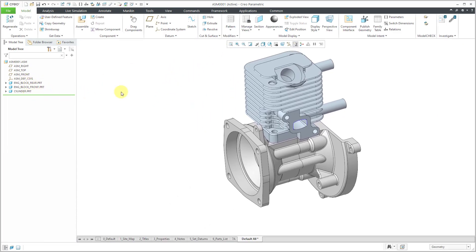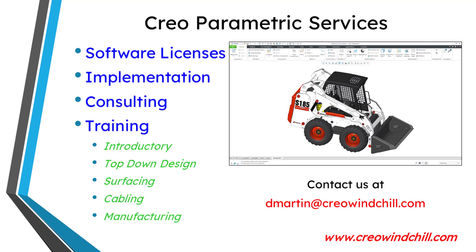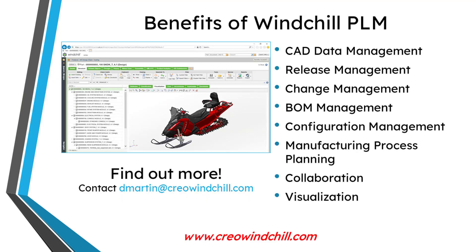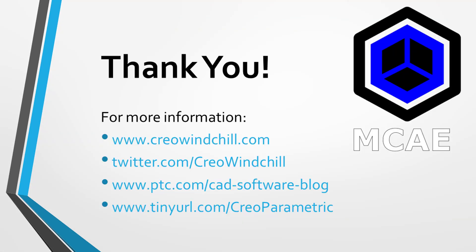There we have our three components inside of the assembly. You can see how you start off a basic assembly using bottom-up design techniques in SolidWorks and Creo Parametric. I hope you enjoyed this video. For more information, please visit www.creowindshow.com. If you learned something from this video, please give it a thumbs up, click the subscribe button, and ring the bell to be informed when new videos are uploaded.